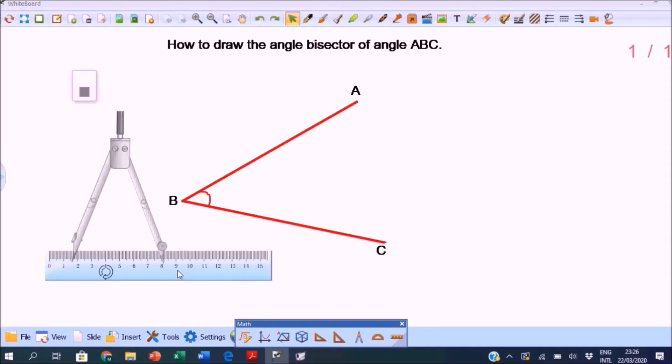Let's draw the angle bisector of angle ABC using a straight edge or ruler and a compass. Place the compass point or needle on vertex B, then open the compasses to a radius that is about half the length of the sides.